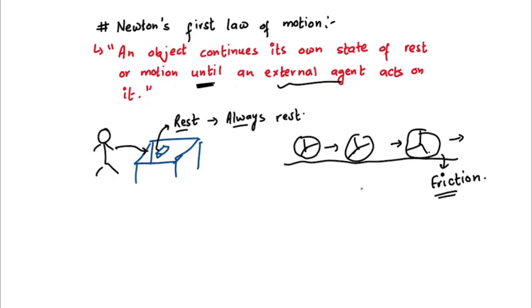If there were no friction, then this ball will always keep on moving. Let's say we made the surface extremely smooth and we put oil here — there is no friction — then this ball will move continuously for all eternity. It will never stop if there is no friction, if there is zero friction. And that's it, that's Newton's first law of motion.